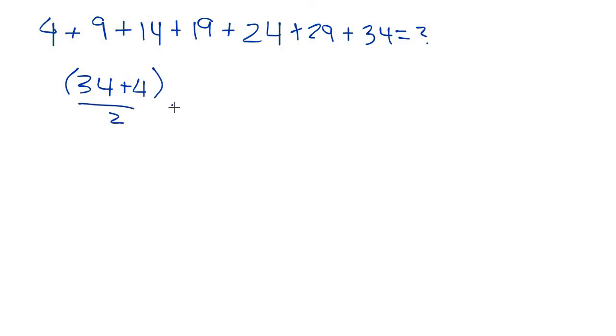...and then times 7, because since the average is 1/7th of the whole sum, then we just multiply by 7.